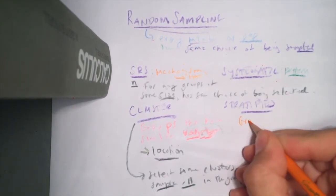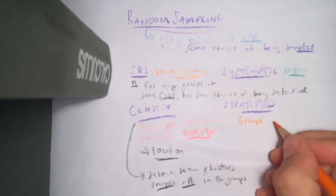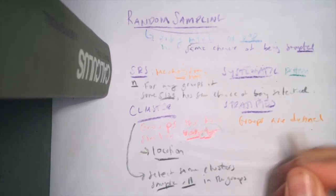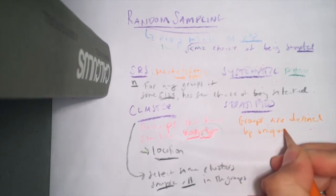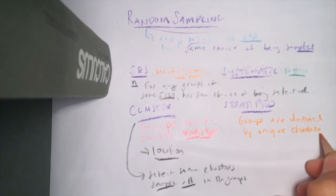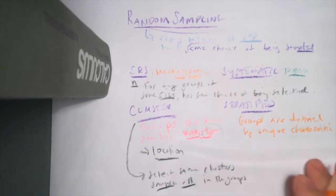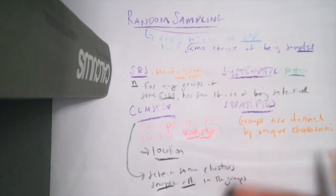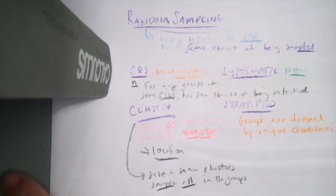In stratified sampling, we have groups again, but instead of having groups that are similar in variety, the groups are defined by some type of unique characteristic — for instance, males versus females, or seniors versus freshmen in high school, or retired versus working people.